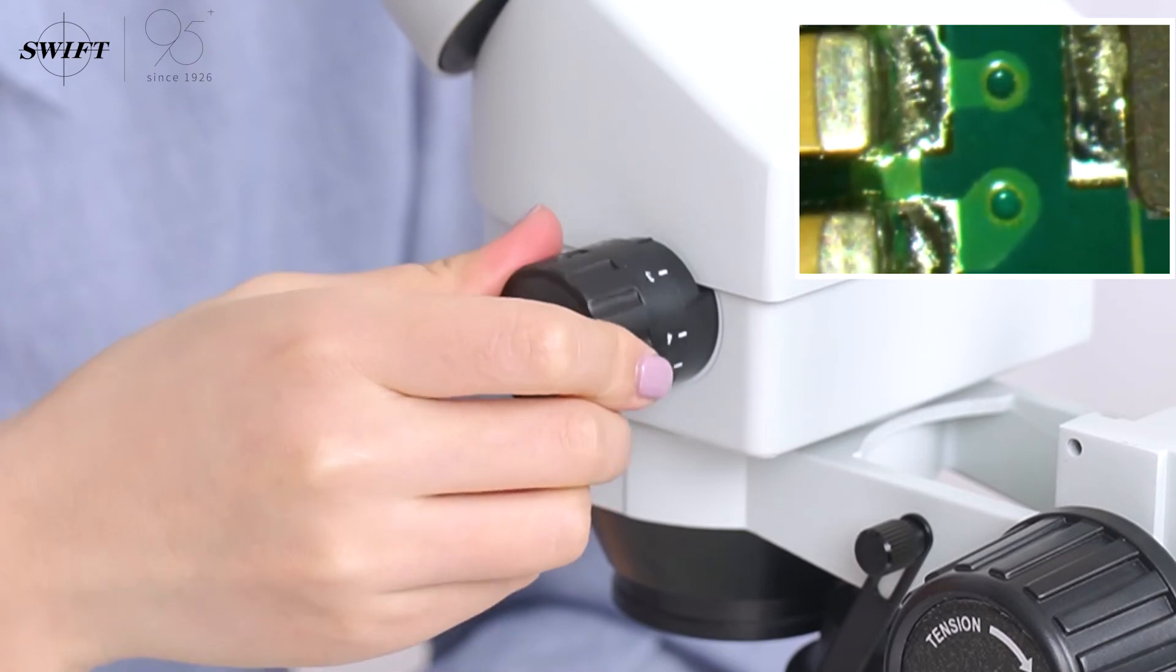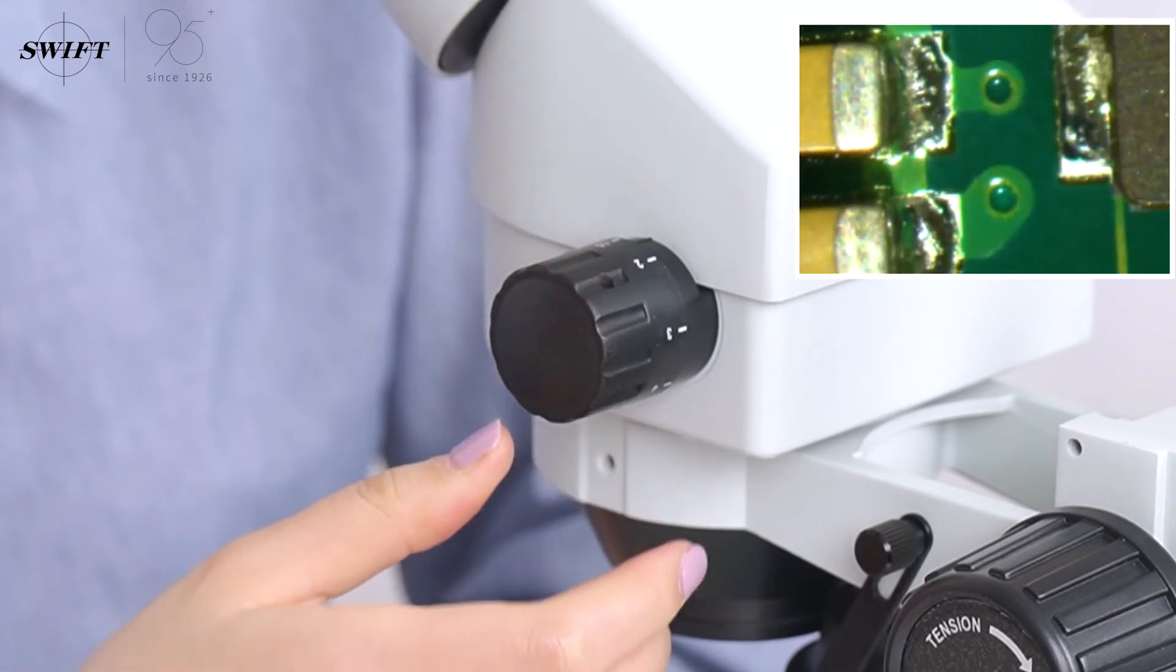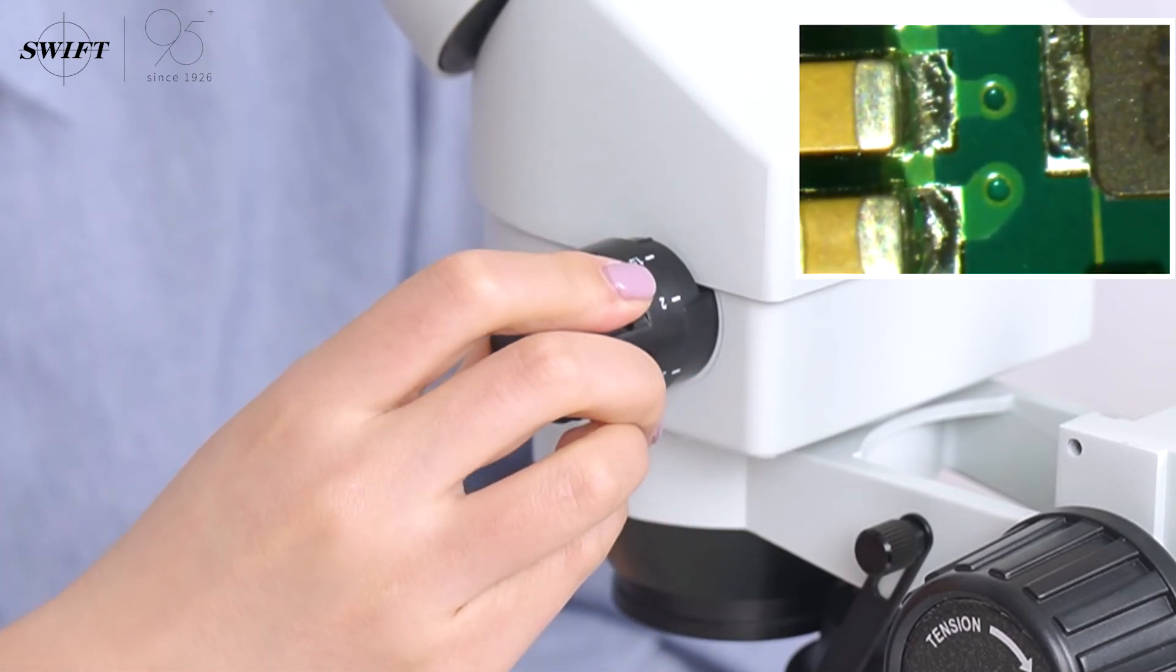From high magnification to low magnification, the image under the microscope is very clear in the process of continuous zooming.